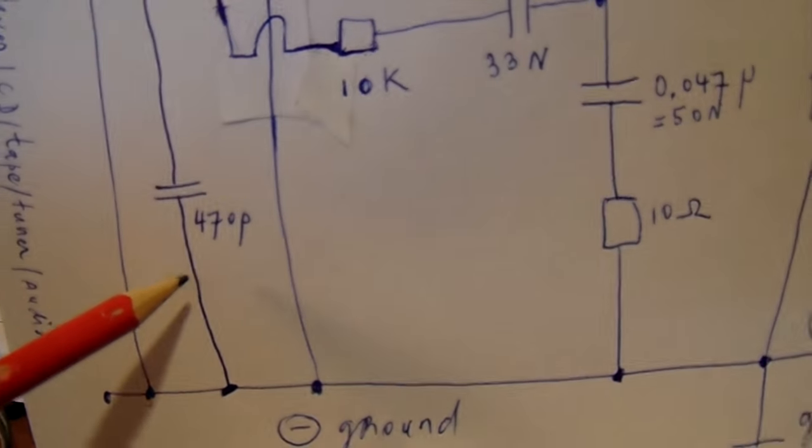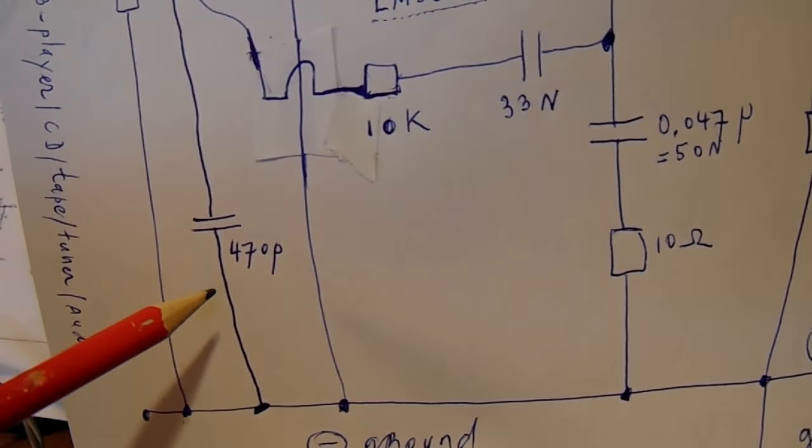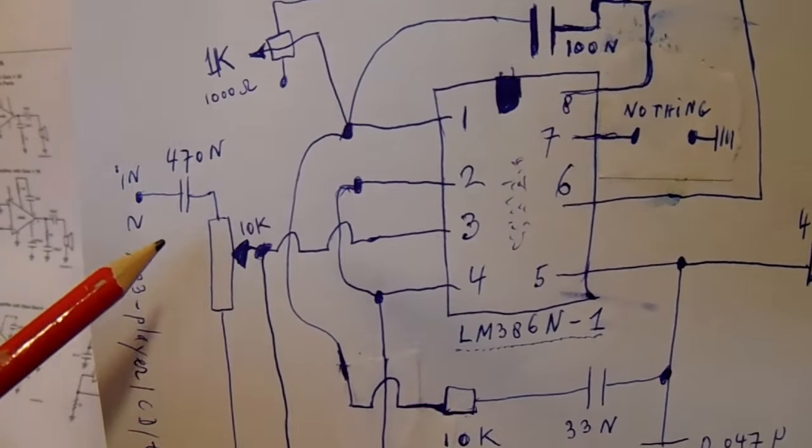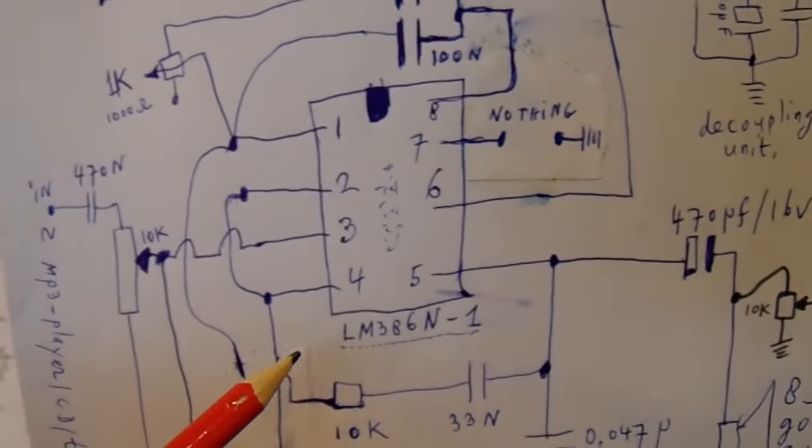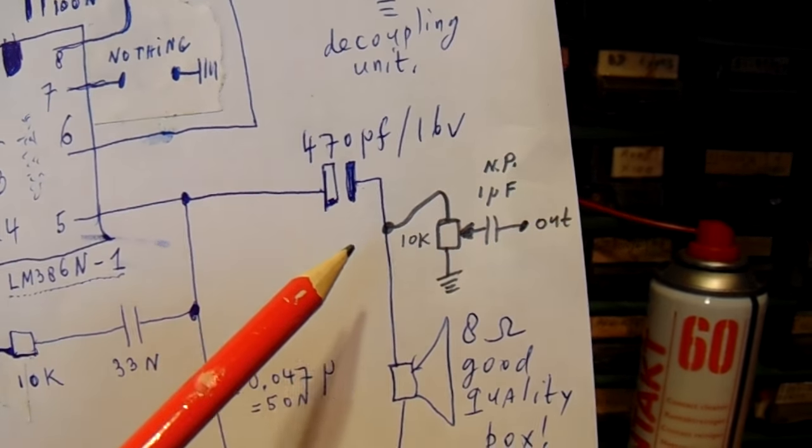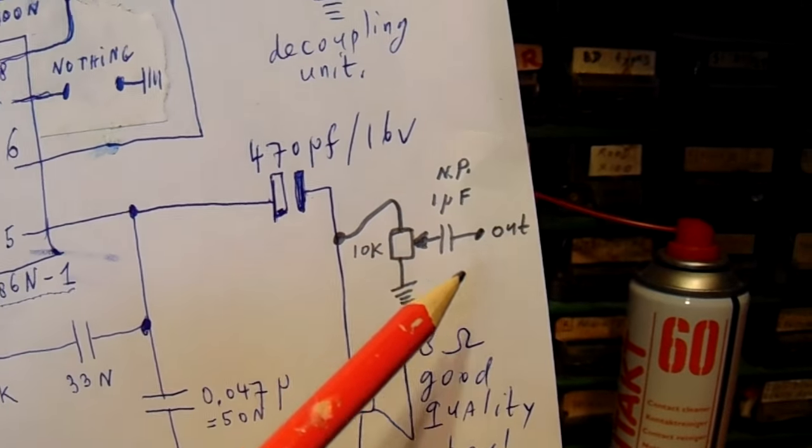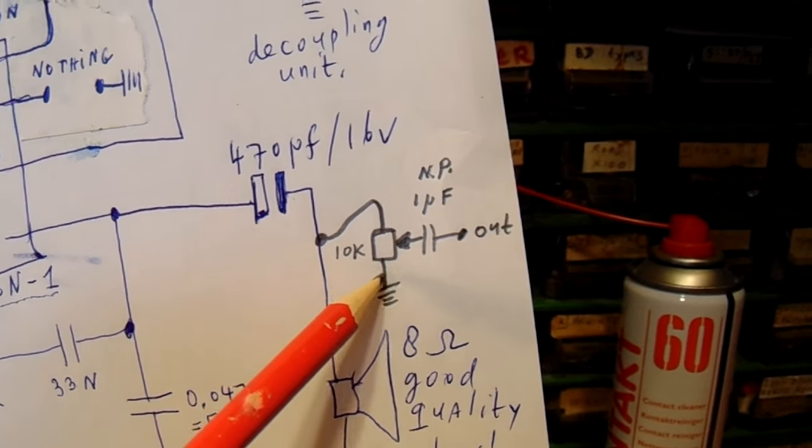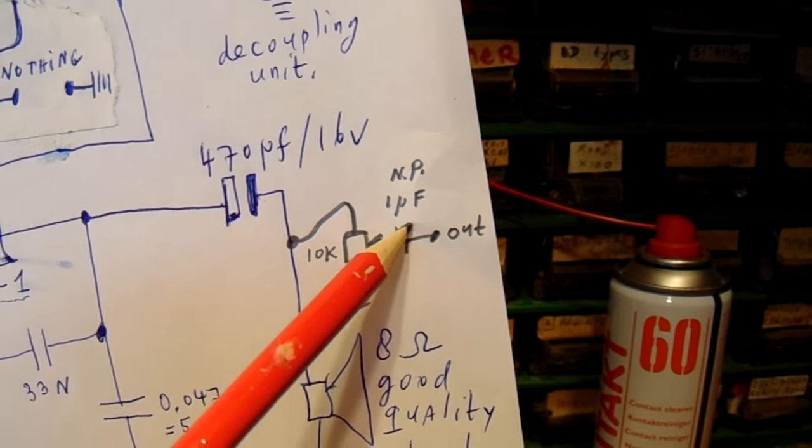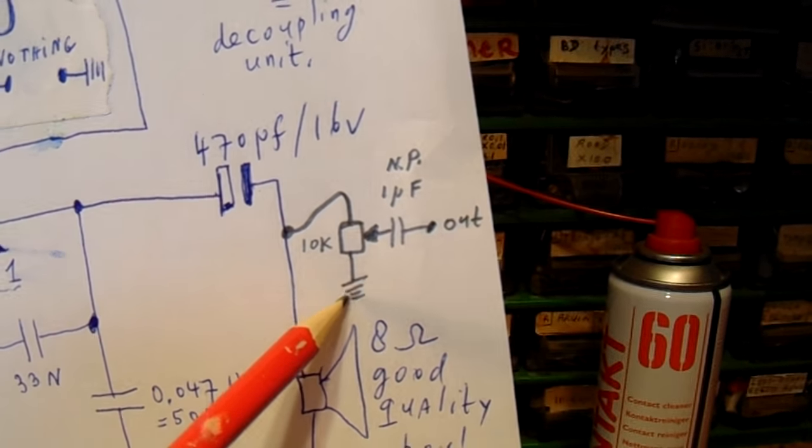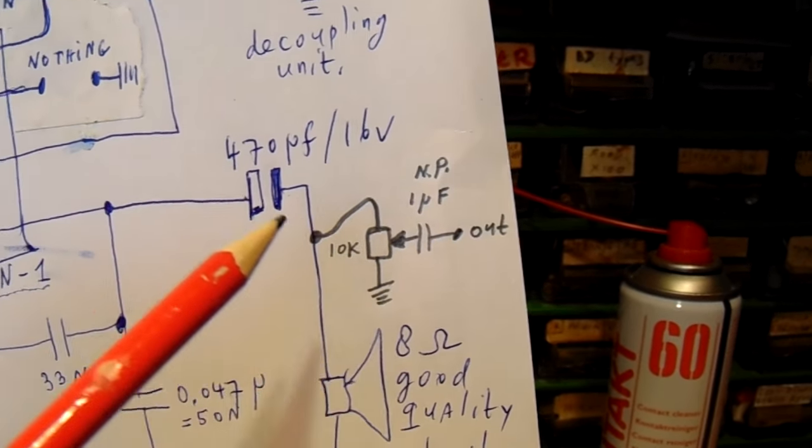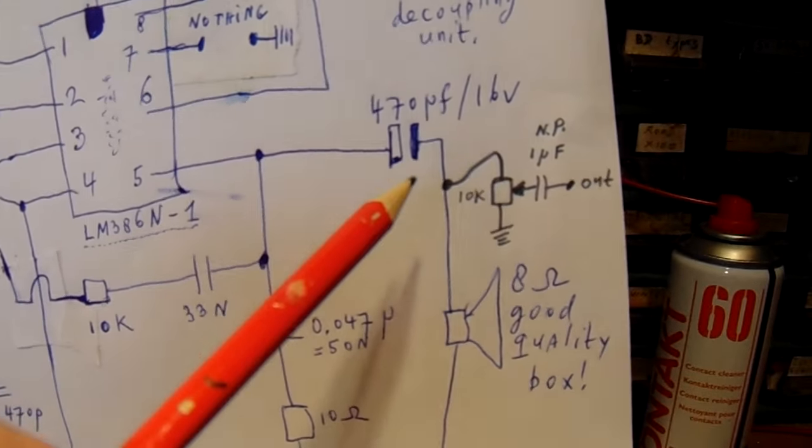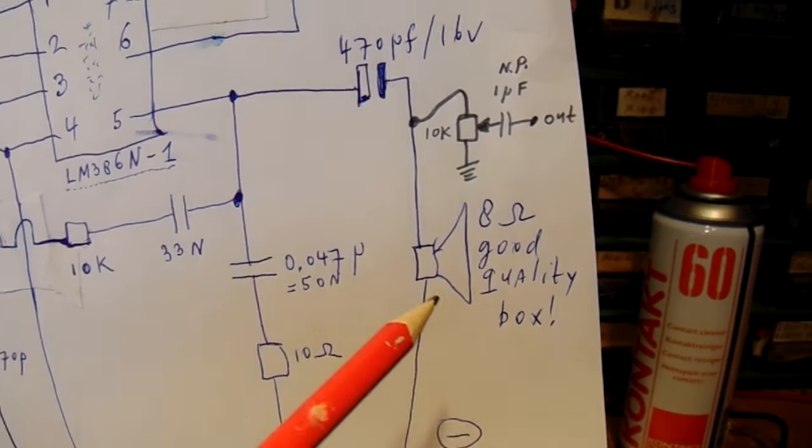This is a 470 picofarad capacitor to prevent oscillations. Input control, output control. When you want to connect it to a power audio amplifier, use this circuit: 10k potentiometer, one microfarad non-polar capacitor, and this must be connected to ground. But you can also use it directly here connected to a loudspeaker box.